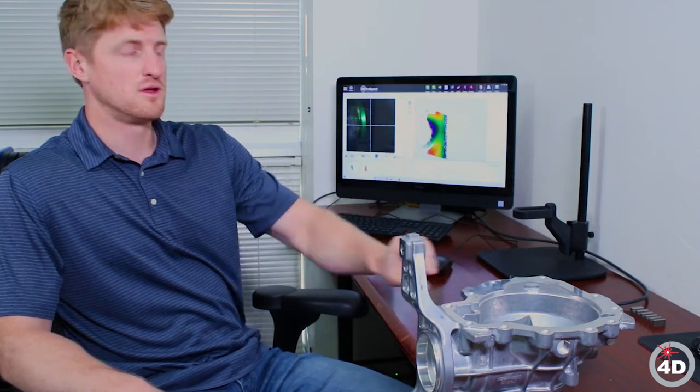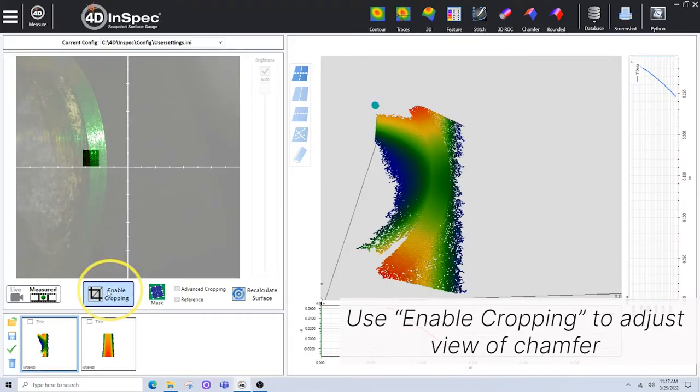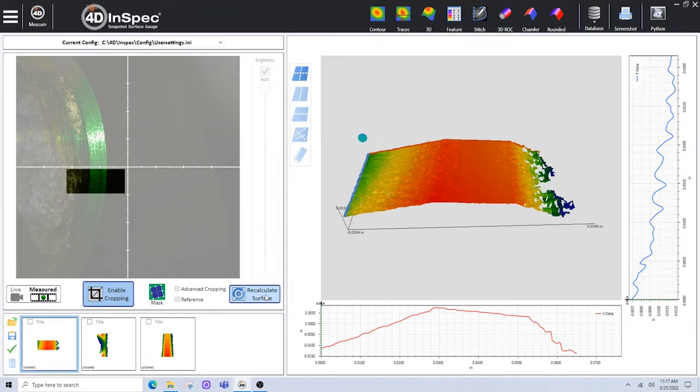On curved surfaces like this bolt hole, I'll need to crop down and tell our software to look for three planes. So I'll crop this using the manual cropping on a surface like this, then recalculate to get a chamfer with three planes here.